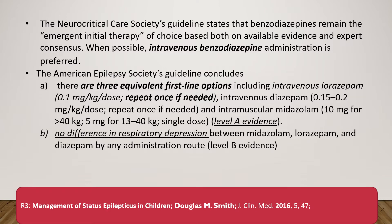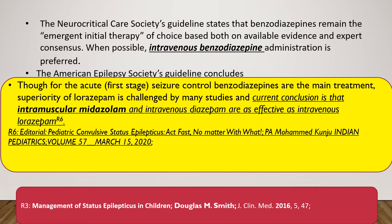Despite pharmacological differences, the American Epilepsy Society says these are three equivalent first-line medications. Contrary to pharmacology textbooks stating lorazepam has less respiratory depression, in real life there is no difference in respiratory depression among the three. Indian literature, including an editorial in Pediatric Convulsive Status Epilepticus as late as March 2020, confirms that the superiority of lorazepam is challenged by many studies. The current conclusion is that intramuscular midazolam and intravenous diazepam are as effective as intravenous lorazepam.